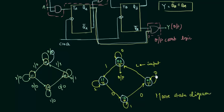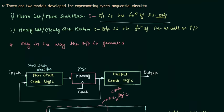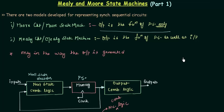You have learned what changes you have to make to convert an original state diagram into a Moore state diagram. This is all that you need to know about Moore state machines. The only thing to remember is that the output is the function of the present state only, and the present state is stored in the flip-flops — our memory block. We will see the Mealy state machine in the next presentation.